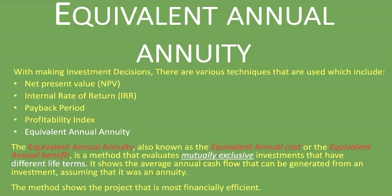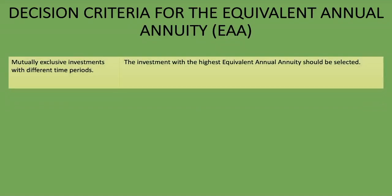The decision criteria for the equivalent annual annuity: for mutually exclusive investments with different time periods, the investment with the highest equivalent annual annuity should be selected. If both projects have the same time period — say both for five years — then the equivalent annual annuity won't work; you'd rather use the net present value. But if they have different time periods, then the equivalent annual annuity is the proper one to use.